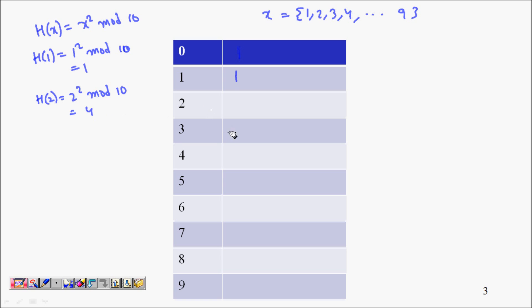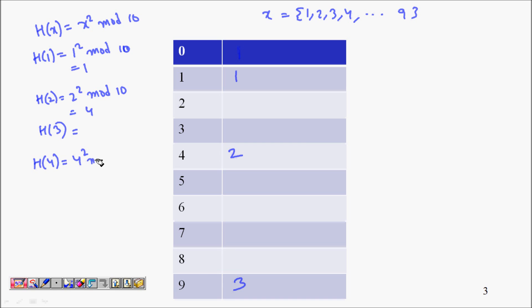h(3) = 3² mod 10 = 9, so 3 goes into cell 9. h(4) = 4² mod 10 = 16 mod 10 = 6, so 4 goes into cell 6.